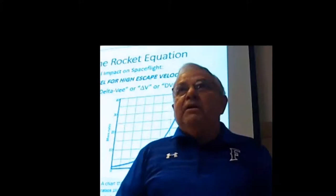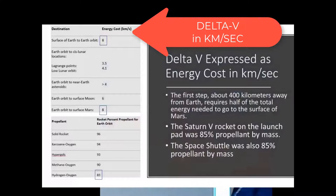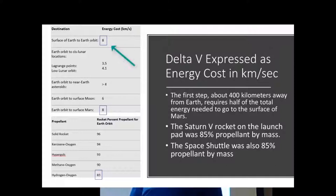That's the Tsiolkovsky equation. Here's some examples of what the delta V looks like. Look here. It takes a delta V of eight to get to Earth orbit. But once I'm in Earth orbit, what does it take to get to the Moon? Only six. You see, it takes less delta V to get to the Moon from Earth orbit than it does to get up there. And that's because the gravity of the Earth is so strong.